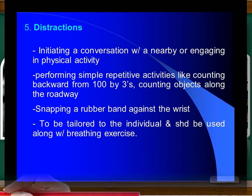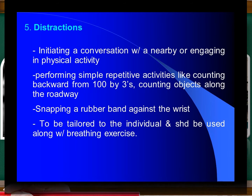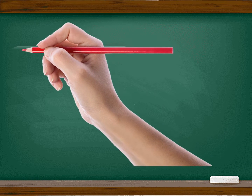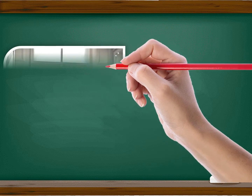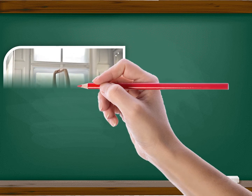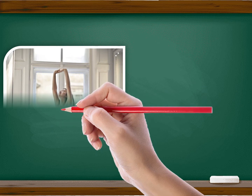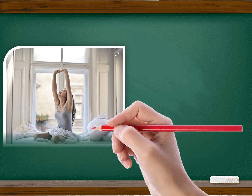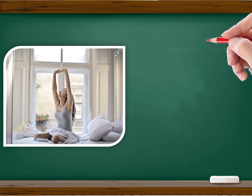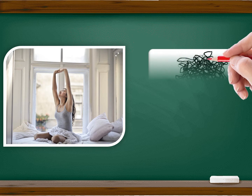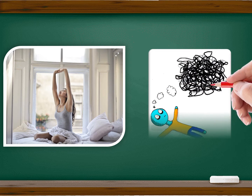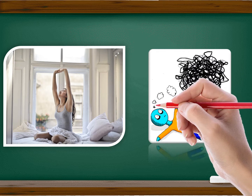Panic disorder without agoraphobia: recurrent unexpected panic attacks. One month or more after an attack, one of the following symptoms: persistent concern about additional attacks, worry about the implications of the attack or its consequences, significant change in behavior following the attacks. Absence of agoraphobia. Not a direct physiologic effect of a substance or medical condition.